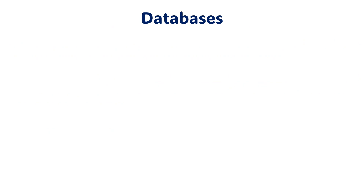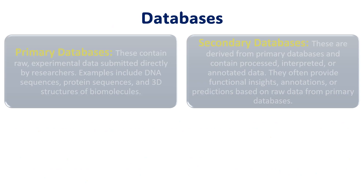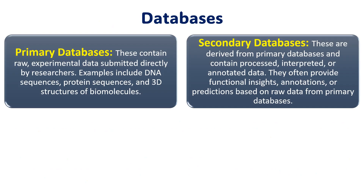So what are the applications and usage? We have two broad categories of databases — we also have a third category which we will see at the end. Generally, the two broad categories are the primary database and the secondary database. The primary database normally contains raw experimentally generated data. Whatever data you generate through the experiment, that raw data is submitted directly to the database.